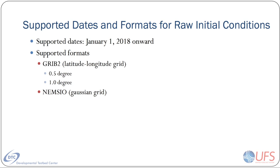The GFS files can be in either GRIB2 or NEMSIO format. GRIB2 stands for Gridded Binary Version 2, and it's a concise data format standardized by the World Meteorological Organization, commonly used in meteorology to store forecast weather data. With this app, you can use GRIB2 resolutions of half a degree or one degree.